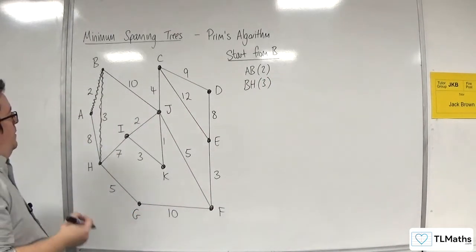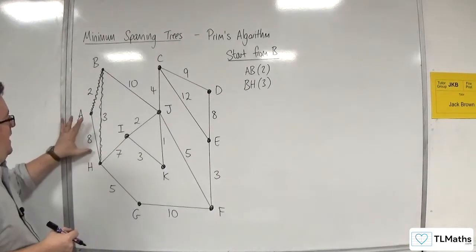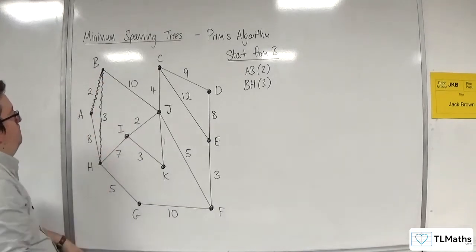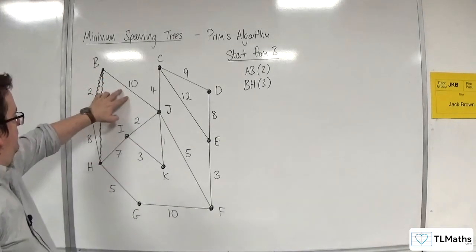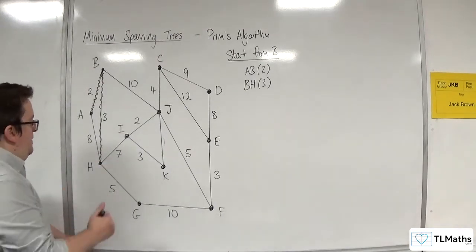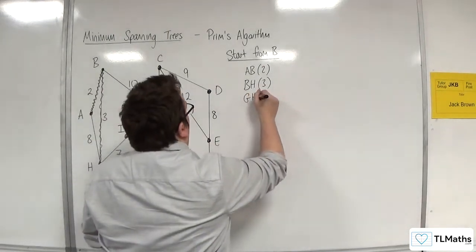So now we're looking for the shortest edge coming out of A, B, or H. 8 won't be picked because that would create a cycle. So 10, or 8, or 7, or 5. Clearly 5, so 5 is the next one to get picked, so GH 5.